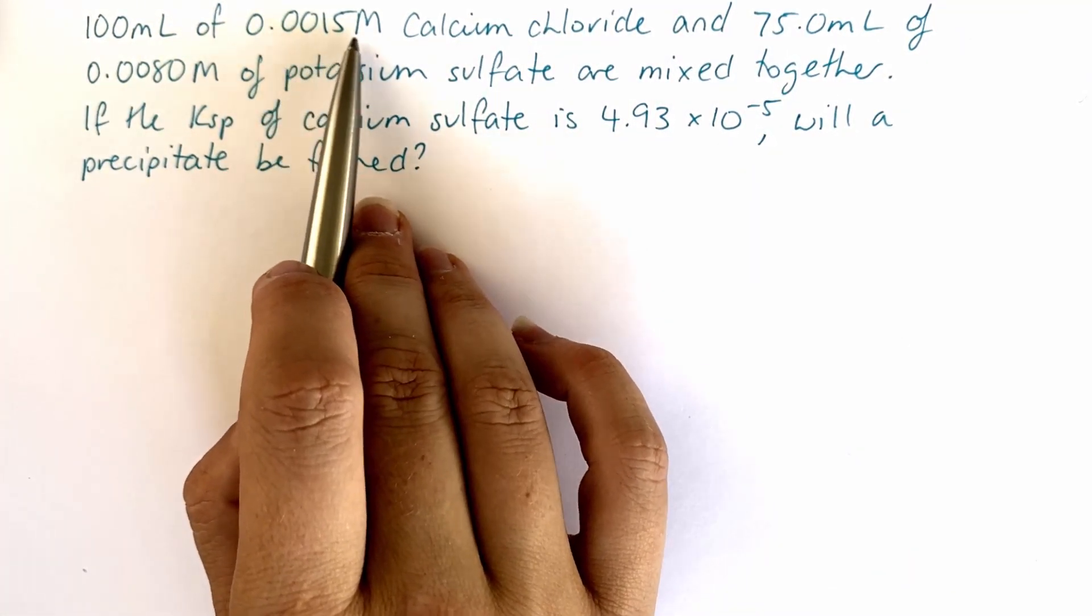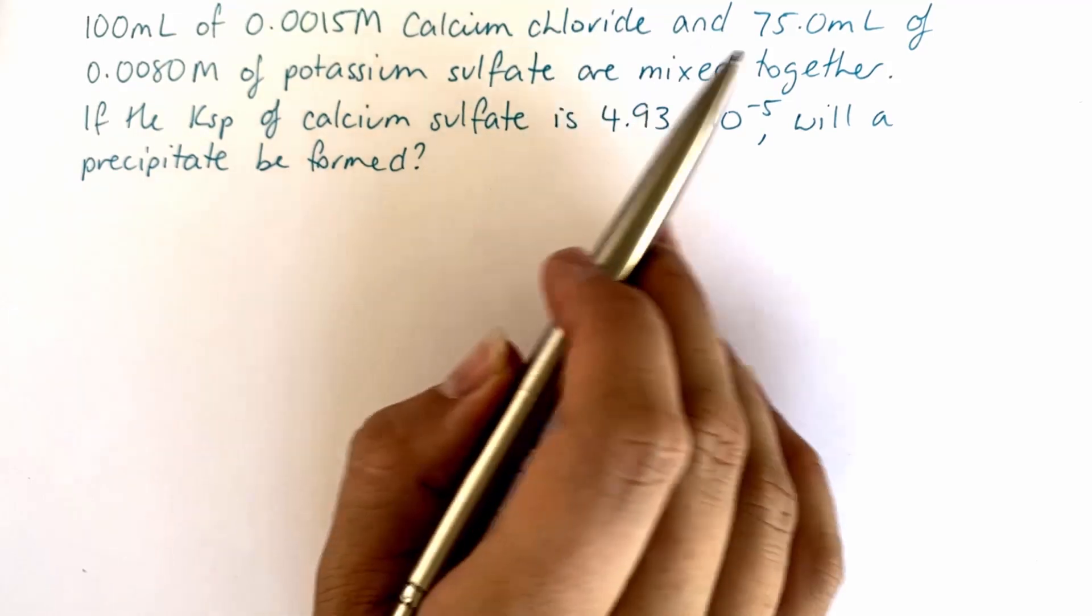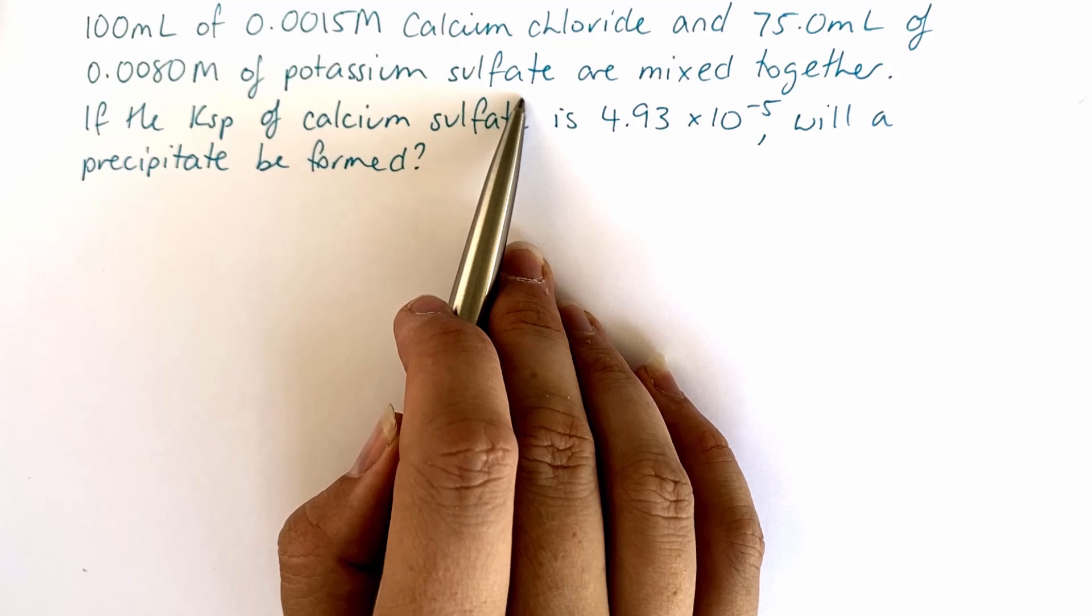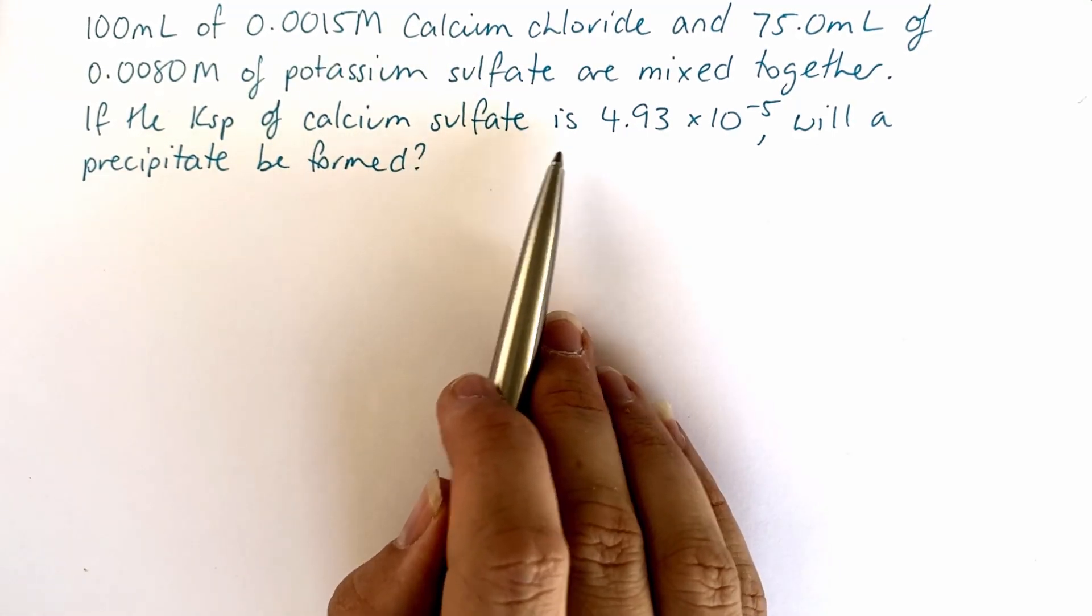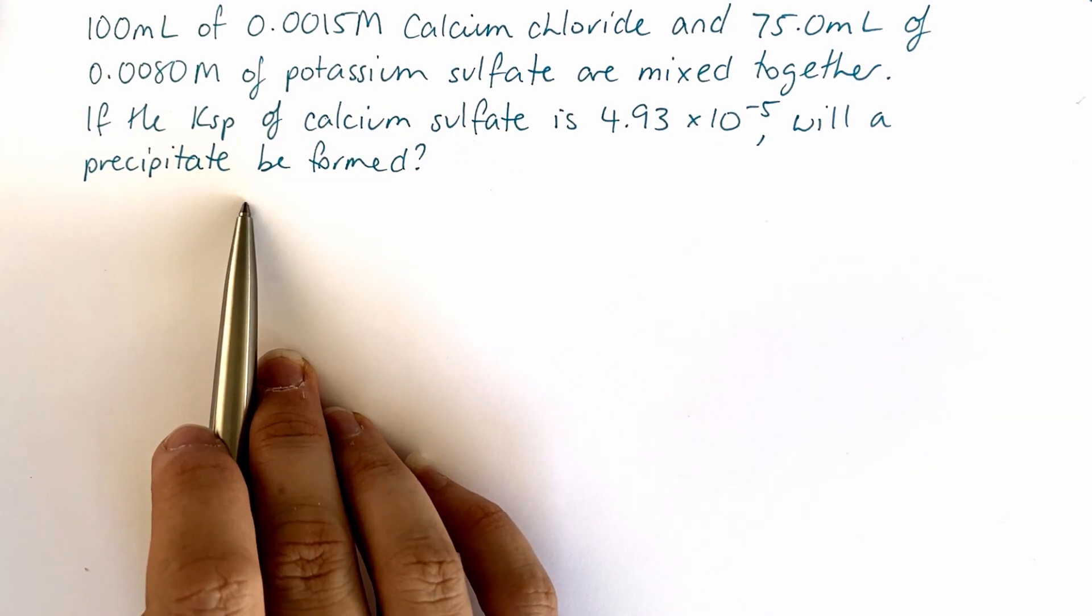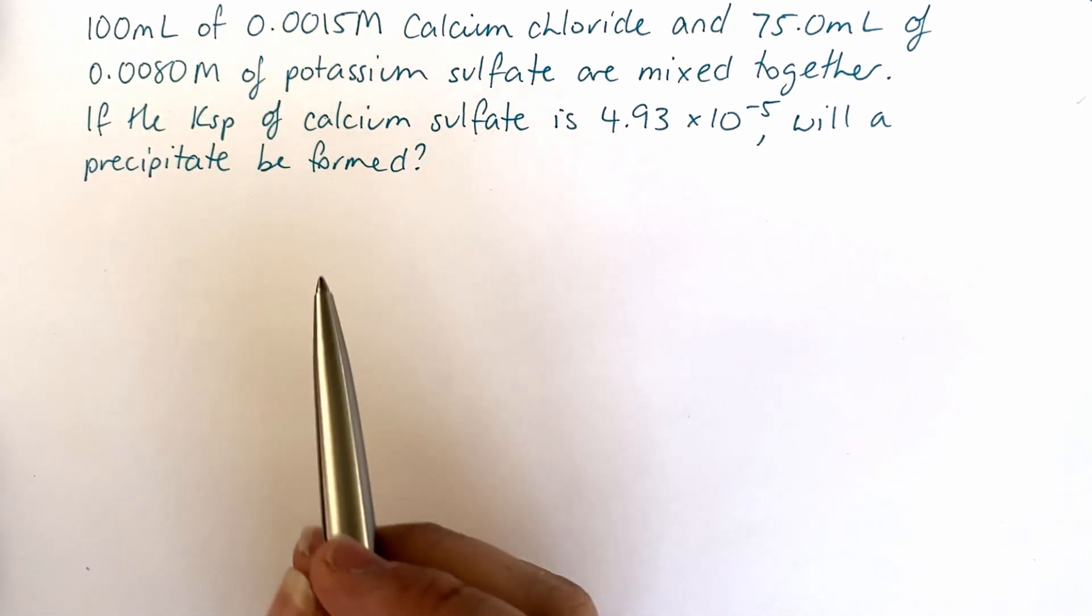and 75 mL of 0.008 molar potassium sulfate mixed together. It gives us the Ksp of calcium sulfate and asks will a precipitate be formed. So first of all, step number one would be to write a fully balanced equation.